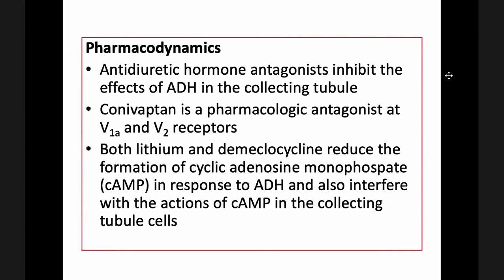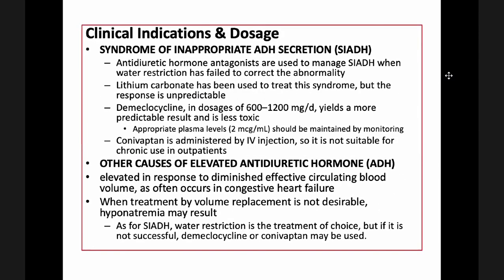Antidiuretic hormone antagonists inhibit the effects of ADH in the collecting tubule. Conivaptan is a pharmacologic antagonist at V1 and V2 receptors. Both lithium and demeclocycline reduce the formation of cyclic AMP in response to ADH and also interfere with the actions of cyclic AMP in the collecting tubule. The drug is used for the treatment of SIADH. Antidiuretic hormone antagonists are used to manage SIADH when water restriction has failed to correct the abnormality; initially water restriction is tried, and if it fails, antidiuretic hormone antagonists are given.